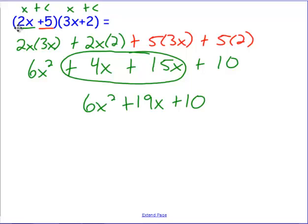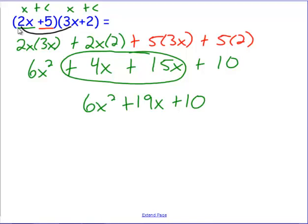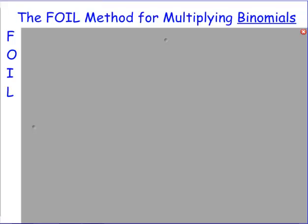As you work this out you're just going to distribute everything. I'm going to take 2x times 3x, the first term times the first term. Then 2x times the last term, 2x times 2. Then I'll work in the middle, 5 times 3x and 5 times 2. What you should see is that there's an order going on when we're multiplying binomials that works every time.